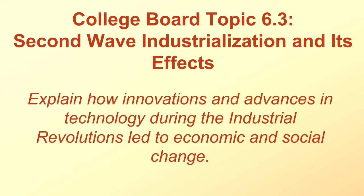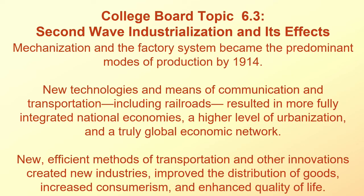There was a second industrial revolution. Mechanization and the factory system became predominant modes of production by 1914. New technologies and means of communication and transportation, including railroads, resulted in more fully integrated national economies, a higher level of urbanization, and a truly global economic network. New, efficient methods of transportation and other innovations improved the distribution of goods, increased consumerism, and enhanced the quality of life.